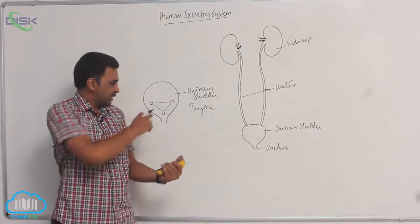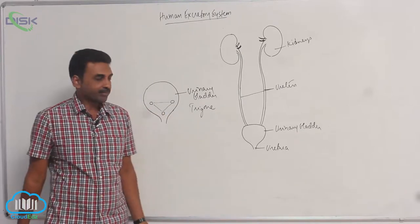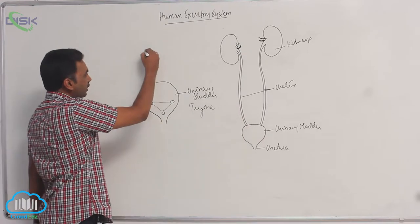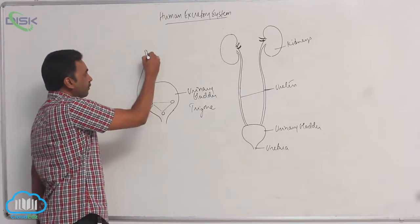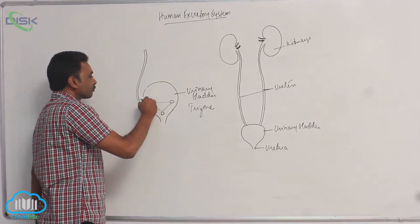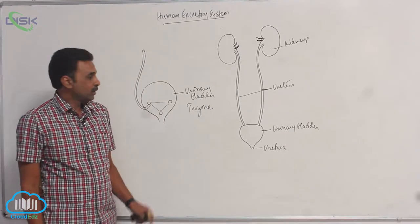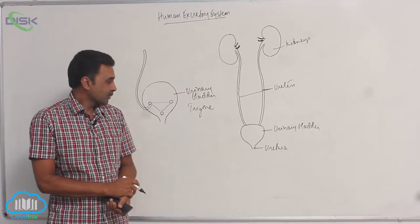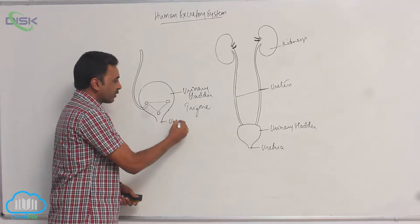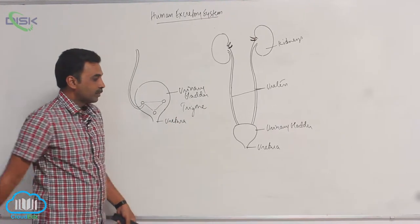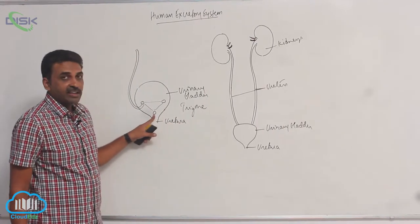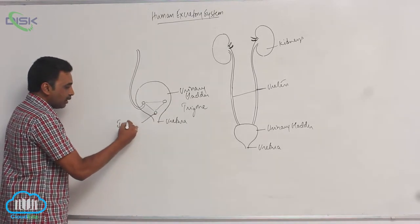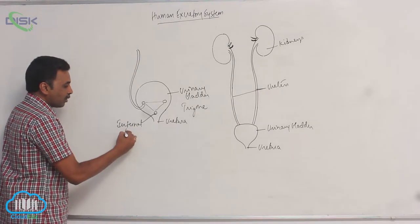The two posterior openings are where the ureters come and open — each ureter opens there. So these two openings are for the ureters, and the anterior opening is for the urethra. This anterior opening is called the internal urethral orifice.